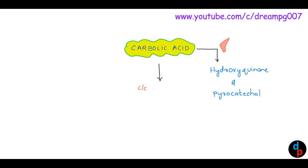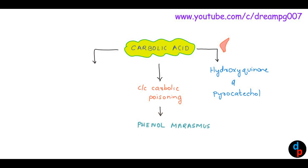Chronic Carbolic Acid poisoning leads to a condition called Phenol Marasmus. Also, Carbolic Acid is used to retard putrefaction.